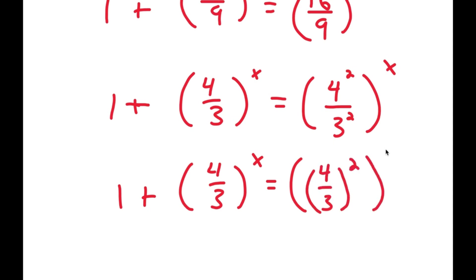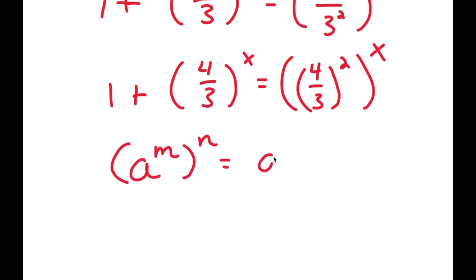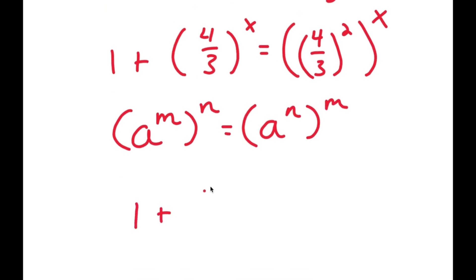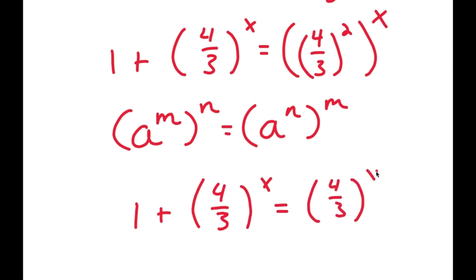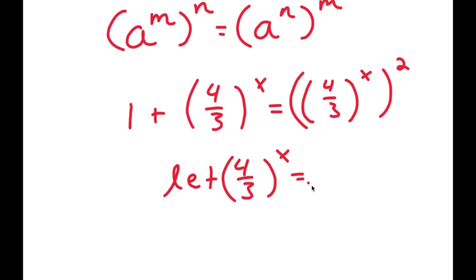Now 4 squared over 3 squared is the same thing as 4 over 3 squared, and I have this to the power of x. If I have something in the form a to the power of m to the power of n, this equals a to the power of n to the power of m. So 4 over 3 to the power of 2 to the power of x I can rewrite as 4 over 3 to the power of x to the power of 2. Now I'm going to let 4 over 3 to the power of x equal to the variable u.